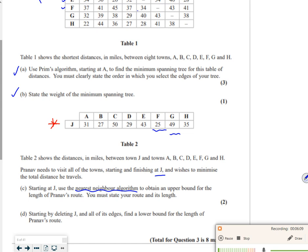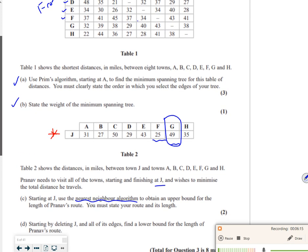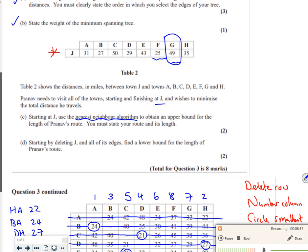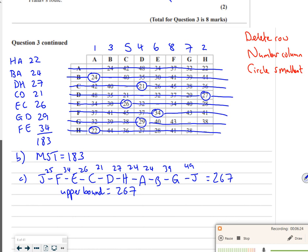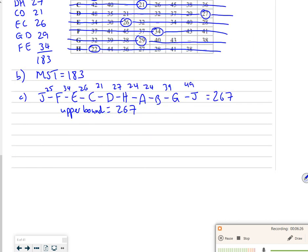The thing with this is, that's 49 coming back. There has to be a better way where it's less coming back. So that's why this is the upper bound. So part D says start by deleting J and then find the lower bound. So the lower bound is my two shortest from J plus my minimum spanning tree without J.